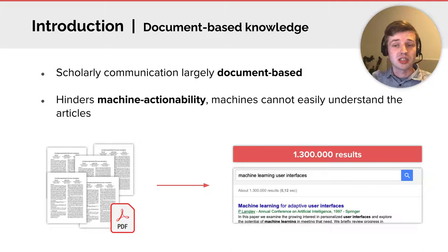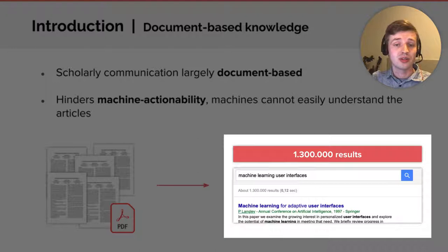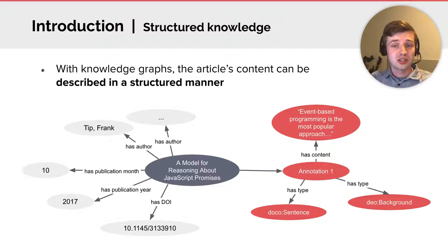And one of the consequences is that finding relevant articles becomes more cumbersome as more articles are getting published. In this example, more than a million results are displayed in Google Scholar when looking for user interfaces based on machine learning.